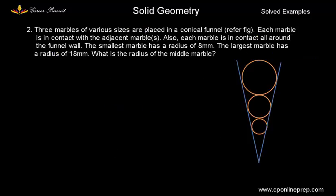The next question says that there are 3 marbles of various sizes placed in a conical funnel as shown in the figure. Each marble is in contact with the adjacent marble. Also, each marble is in contact all around the funnel wall. The smallest marble has a radius of 8 mm and the largest marble has a radius of 18 mm. We have to find the radius of the middle marble. So, the radius of this circle is 8 and the radius of this circle is 18. We have to find the radius of the middle circle.